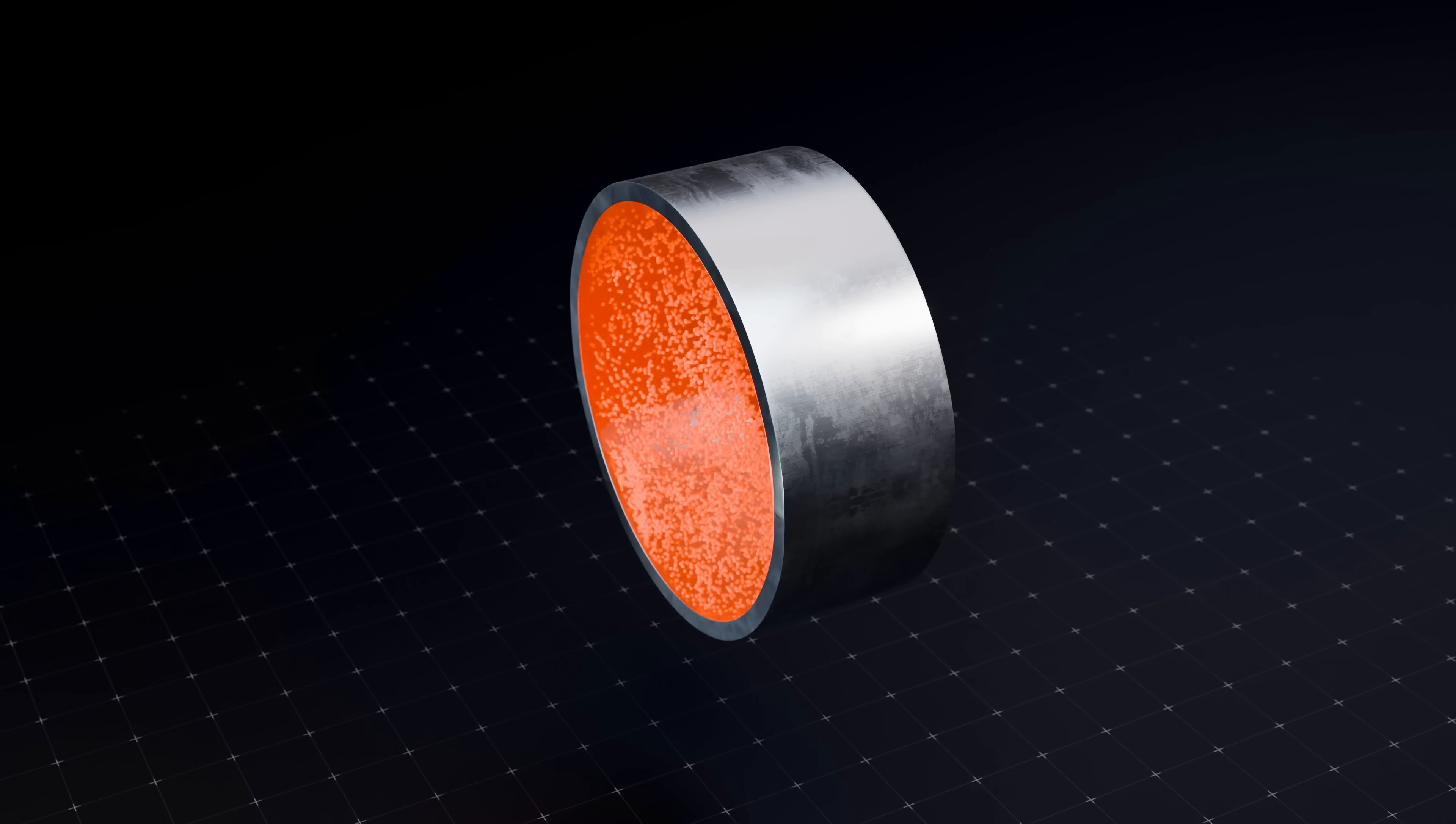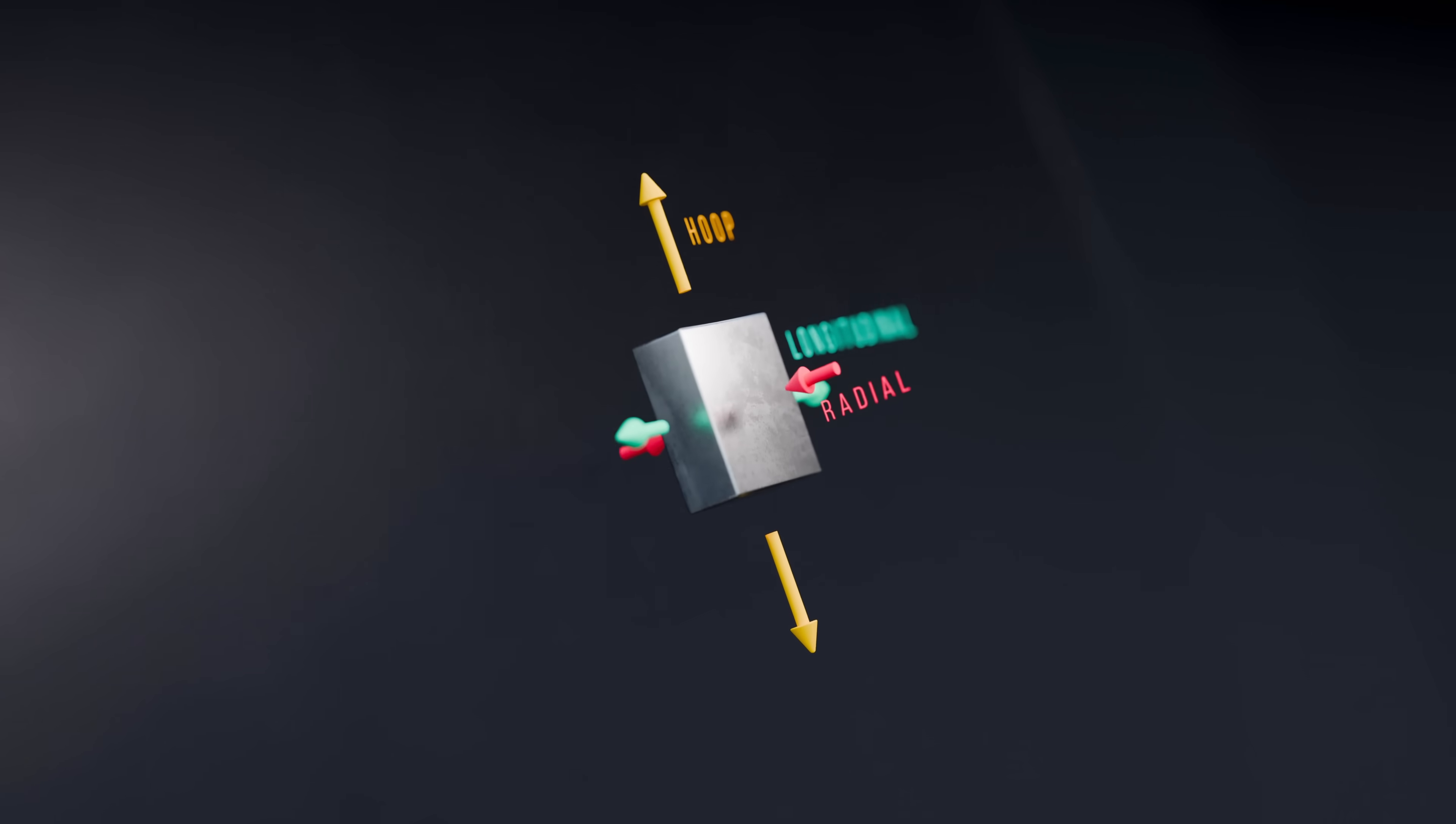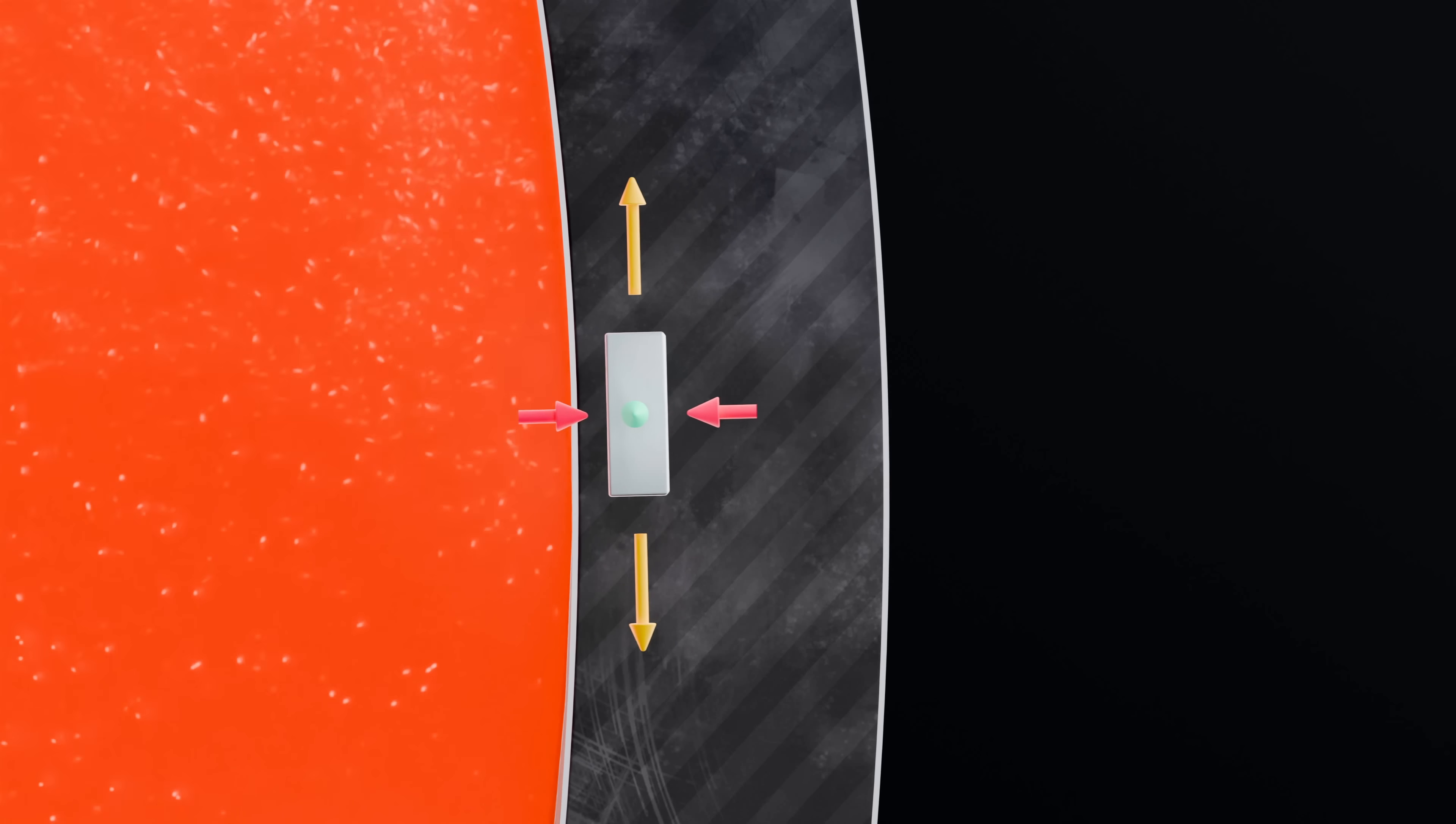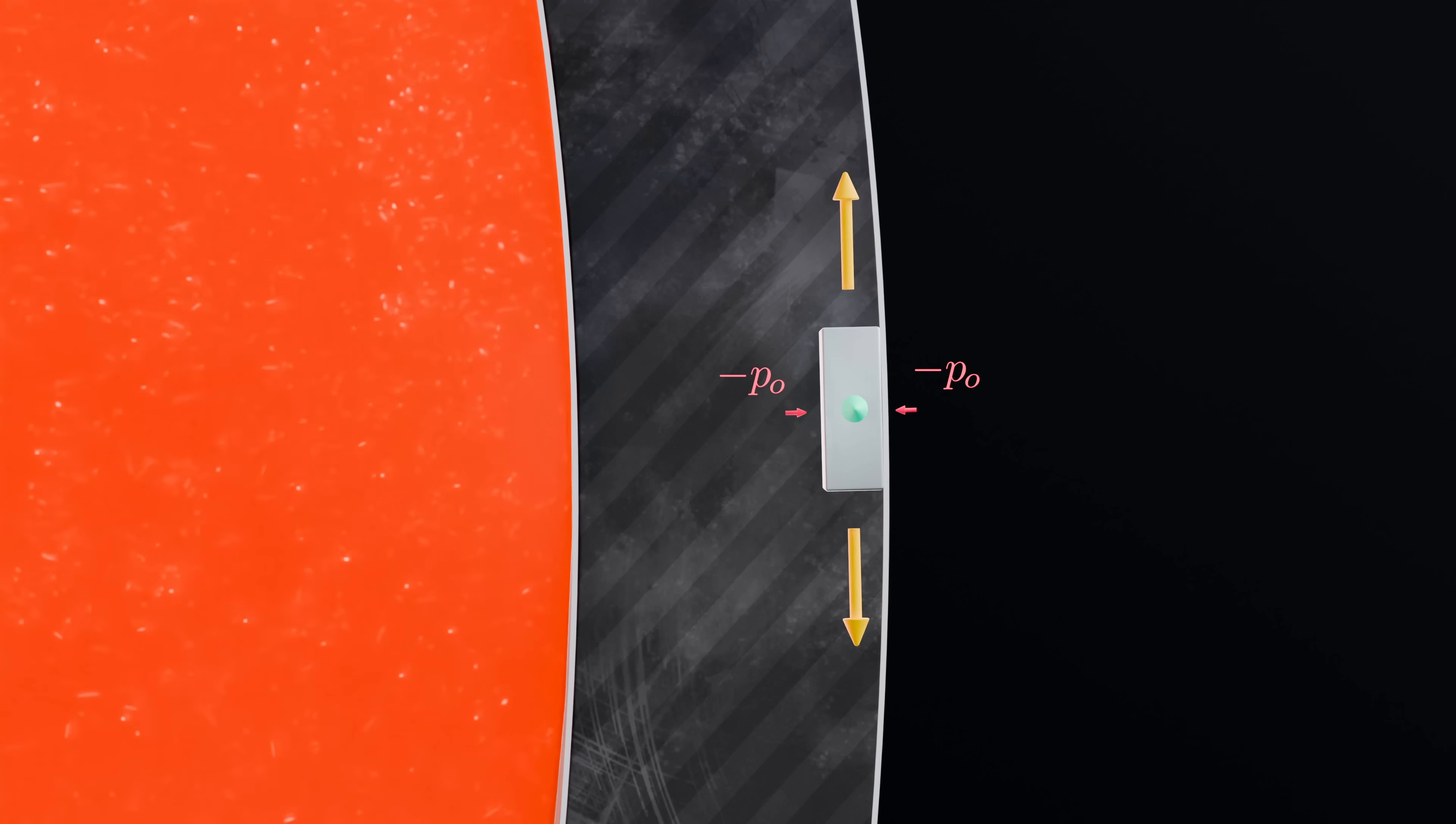The second simplification is that we accounted for stresses in the hoop and longitudinal directions, but we completely neglected any stresses acting in the radial direction. In reality, on the inner surface of the pipe wall, there will be a compressive radial stress equal in magnitude to the internal pressure to balance the normal force applied by the pressurized fluid. On the outer surface, the radial stress has a magnitude equal to the external pressure, which is pretty much zero for a vessel in air.